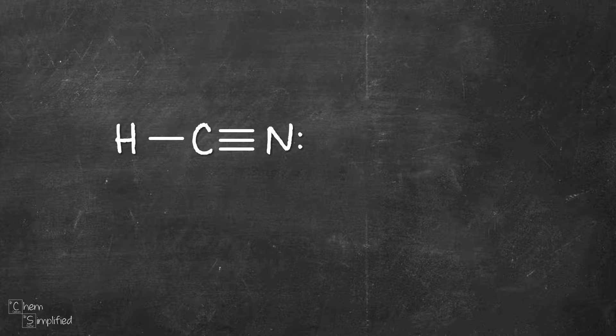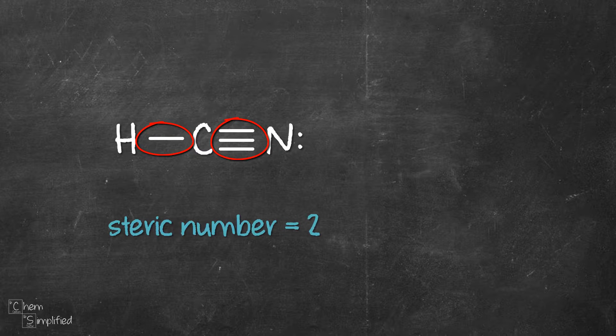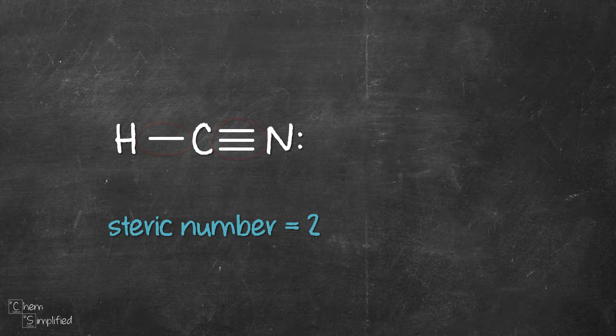So let's look at our first example, HCN. Carbon is the central atom and there are two groups connected to it, so the steric number for HCN is 2. Since there's no lone pair on carbon, the number of lone pairs would be 0.